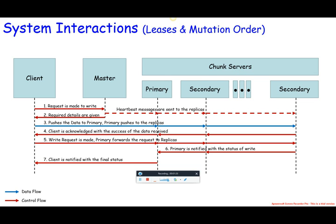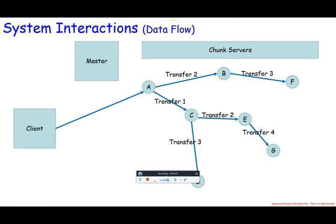Master involvement is reduced so it remains available for high-priority activities. Heartbeat messages are sent to replicas and are used to extend or revoke leases and mutations. To use the network efficiently, data is pushed linearly. High-bandwidth links are used and data is sent to the closest replica. GFS uses simple network topology to find distances, and switched networks with full-duplex links transfer the data. Pipelining is used over TCP connections, and each replica checks the next replica and forwards data immediately.